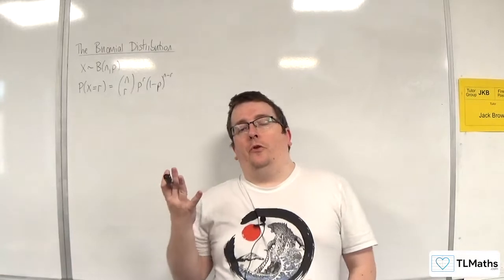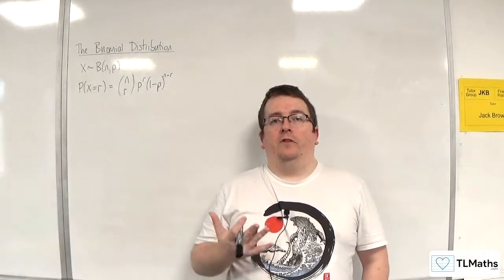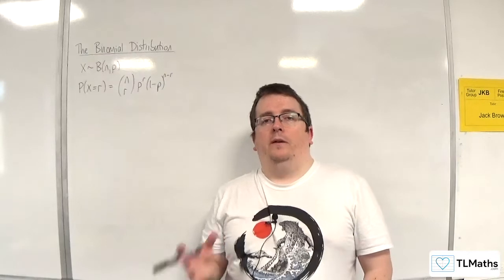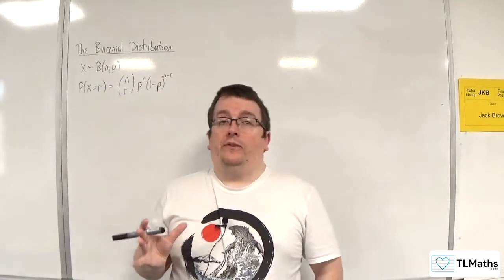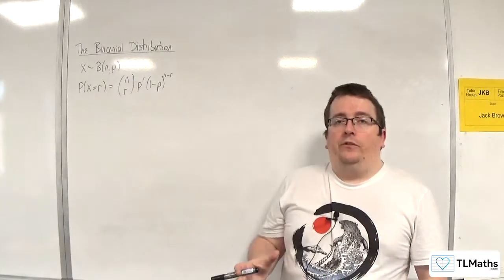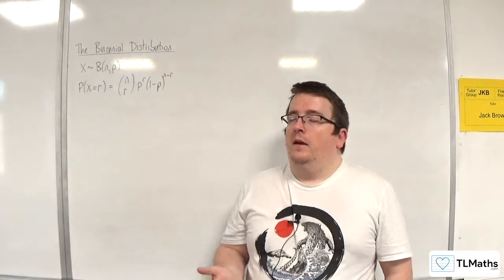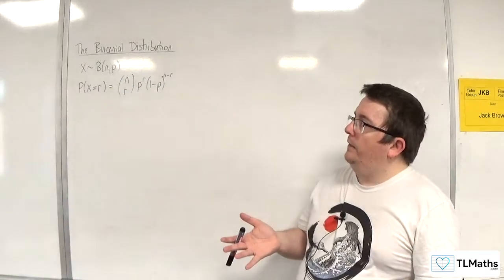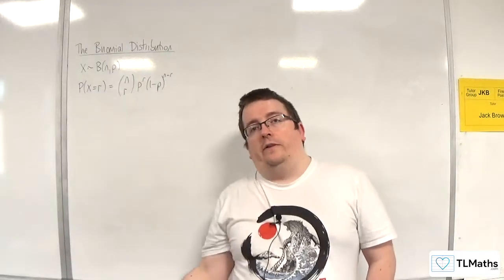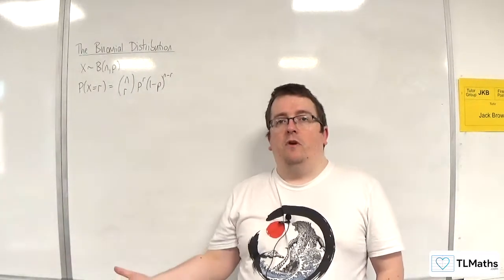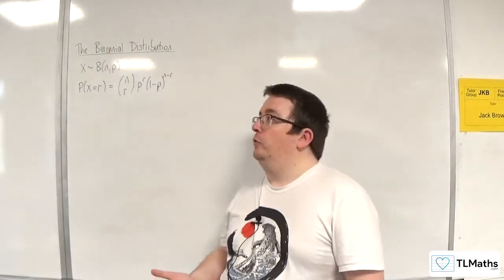In this video, I want to derive E(X) for the binomial distribution, but strictly through just looking at summations. I've put this as an extension, because you wouldn't be expected to replicate this in the exam. But I think it would be nice to see that we can do this, as we've derived E(X) and Var(X) for the other distributions as well.